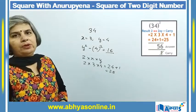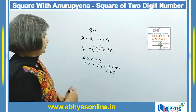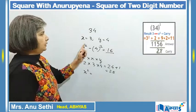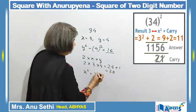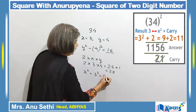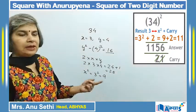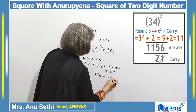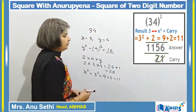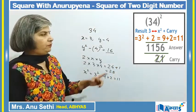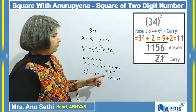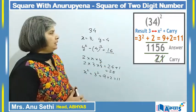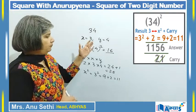In the next step, I find x squared. Since x is 3, the square of 3 is 9. I add the carry of 2 to get 11. This 11 is prefixed in the answer, so the final answer becomes 1156.